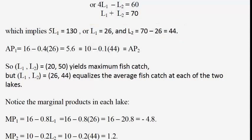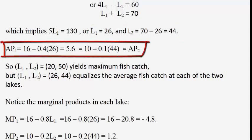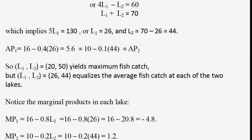We verify by plugging L1 equals 26 and L2 equals 44 into the average product functions. For lake 2: 0.1 times 44 is 4.4, and 10 minus 4.4 is 5.6. The average fish catch at both lakes will be 5.6. The total fish catch is 5.6 times 70, which equals 392. This is obviously fewer fish than the maximum of 410. The interesting aspect is that when fisher persons act in their own self-interest, we actually catch fewer fish overall.